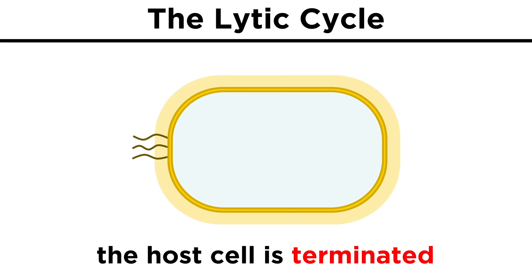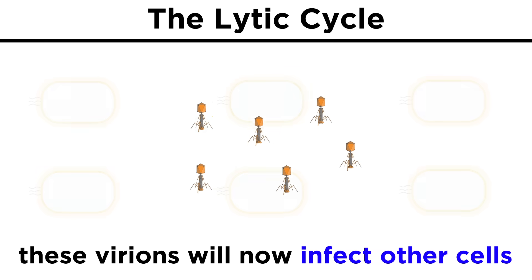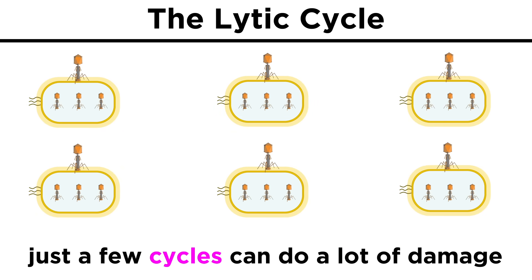With the lytic cycle, the host cell is terminated at the end of the replicative cycle. This happens once many viruses have been generated and the cell bursts open — or lysis — releasing them to then go and infect other cells. Given the exponential nature of this process, just a few successive lytic cycles can destroy an entire bacterial population in a couple of hours.